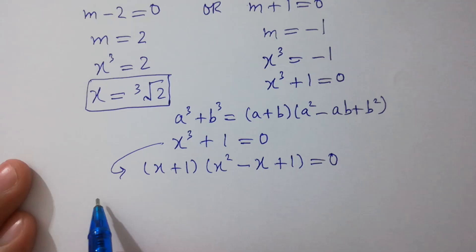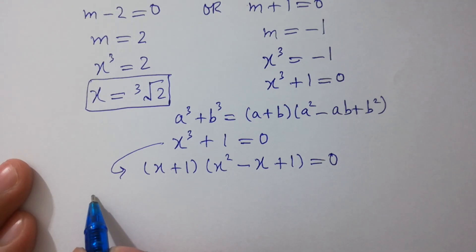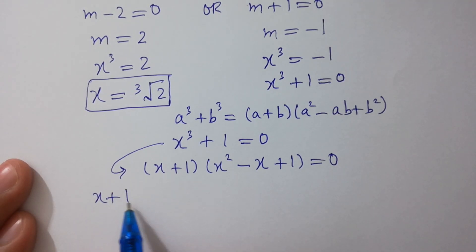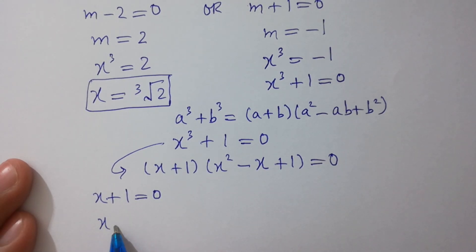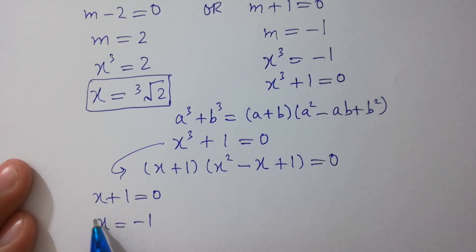From the first factor, either x plus 1 equal to 0, giving x equal to minus 1. This is the value x₂ equals minus 1.